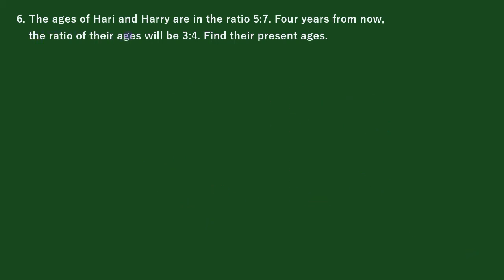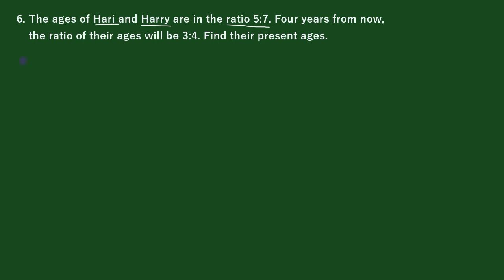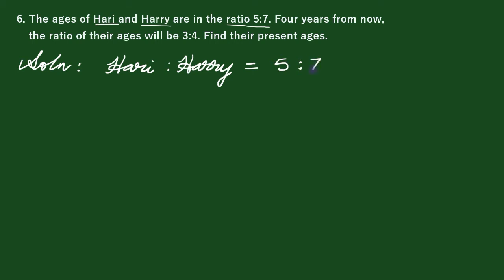The ages of Hari and Hariya are in the ratio of 5 is to 7. We can also divide by number 2. I would give you 5 to 7. So we will give you 2 of 5 to 7.